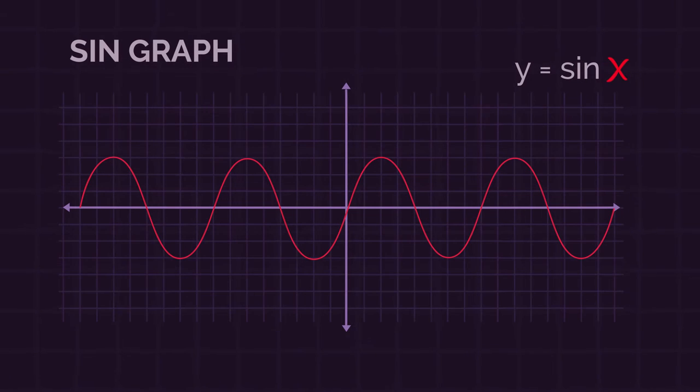So let's start with the three trigonometric functions. The sine and cos graphs are really similar. Let's have a look at the sine graph. It crosses through the origin, has a maximum of 1 and a minimum of negative 1, and it repeats forever in the positive and negative directions.